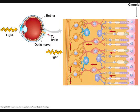The choroid, the vascular tunic, is the middle layer of the eyeball, lying between the outer sclera and the inner retina. The retina is the innermost layer of the eyeball, the neural tunic.